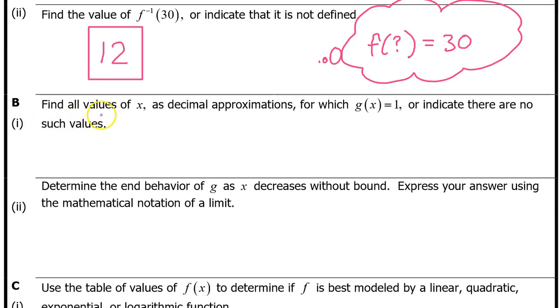Part B1. Find all values of x as decimal approximations for which g of x equals 1, or indicate that there are no such values.